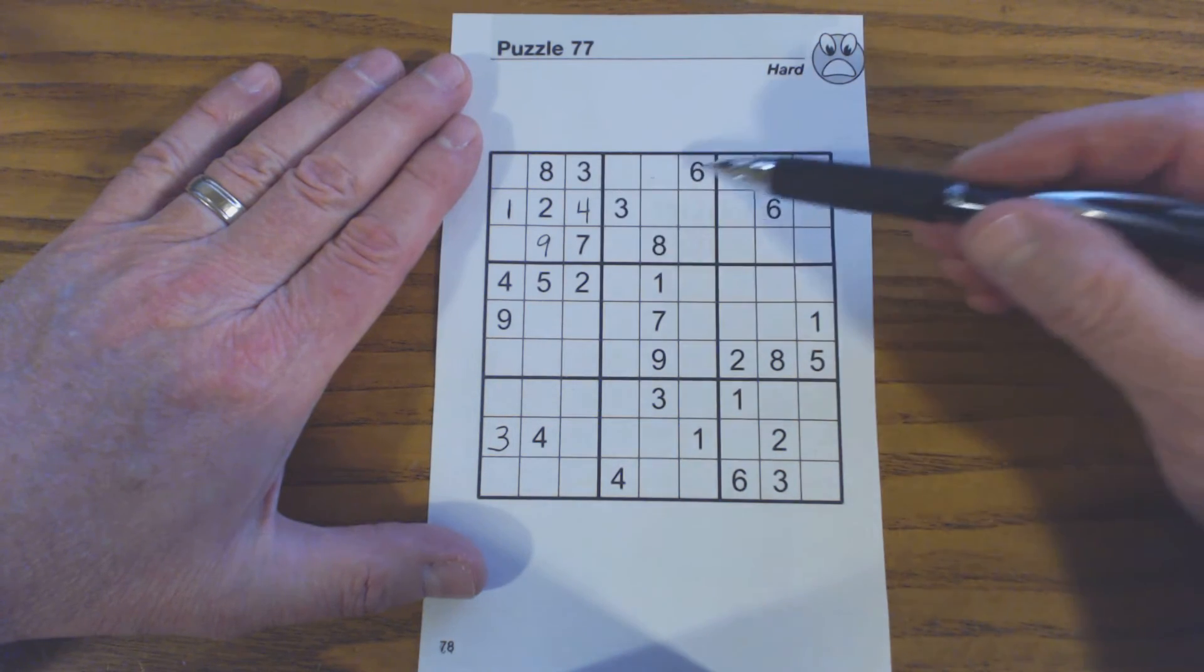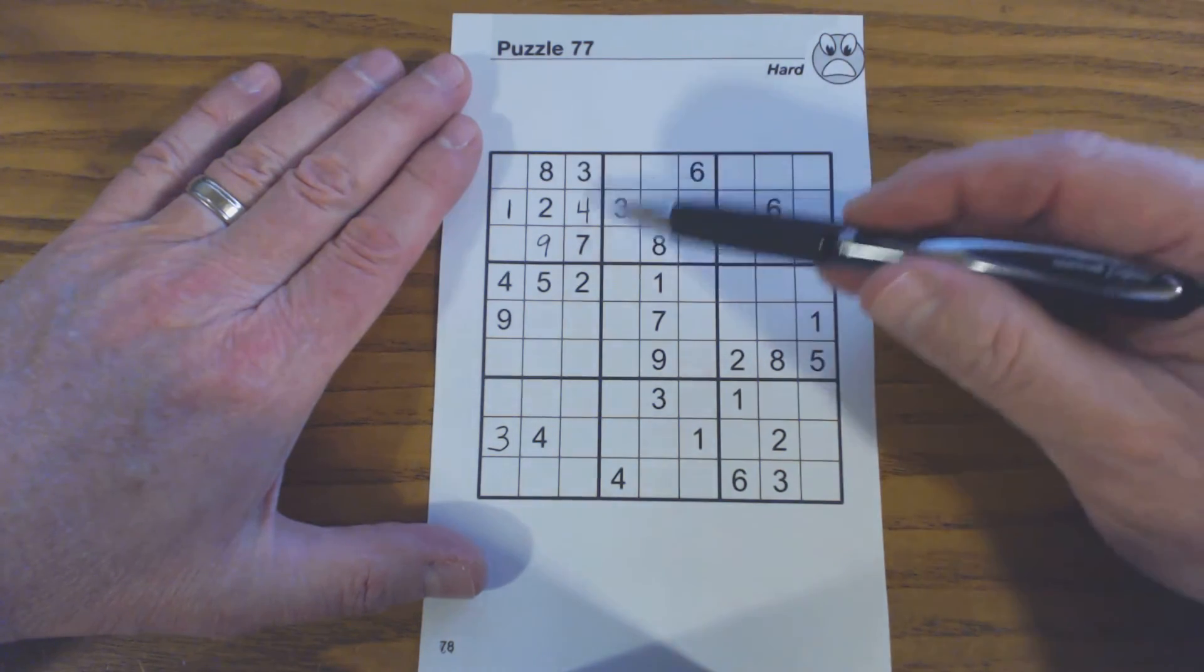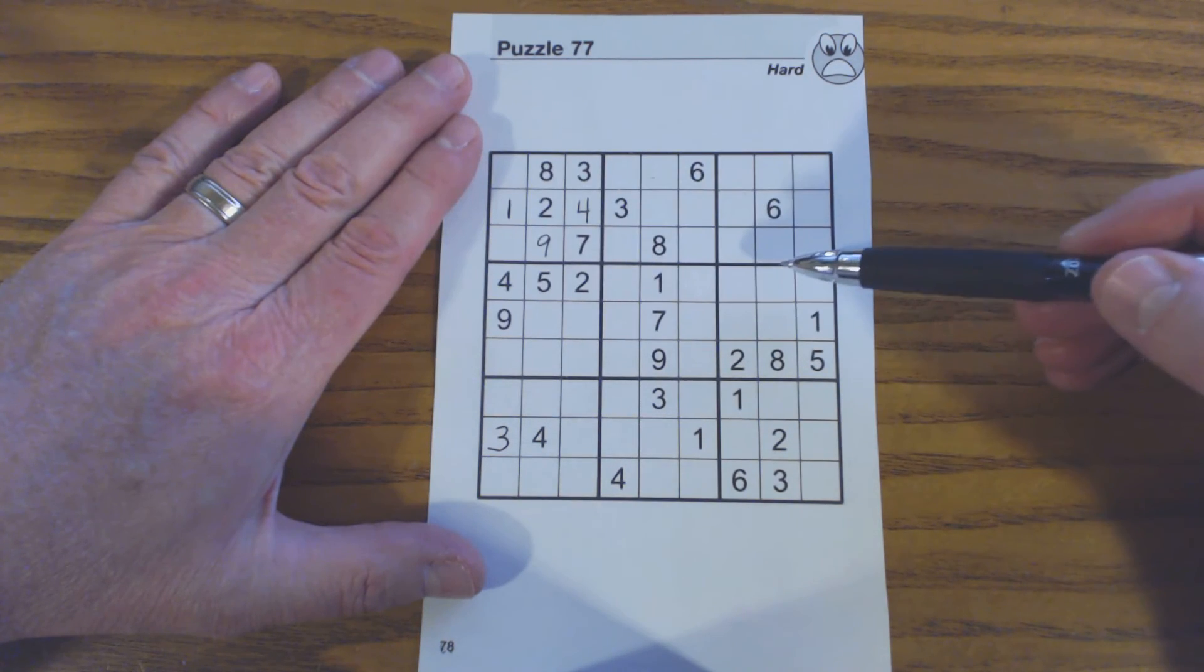So these two squares cover row one and row three for ones, even though we don't know where those ones are yet.